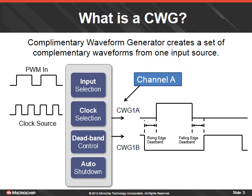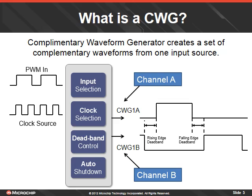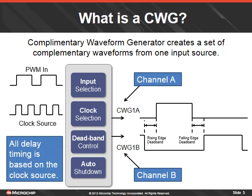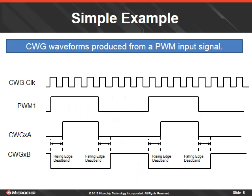There is a channel A that can be directed to another peripheral or an IO pin. A second channel B can be a complement or a similar waveform to channel A. All delay timing for these signals are based on the resolution of the clock source. Shown here is a plot of the CWG waveforms produced from a PWM input signal. The edges of the PWM input signal drive the edges of the output waveforms. Rising and falling edge deadband is also an option.